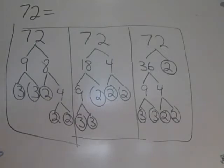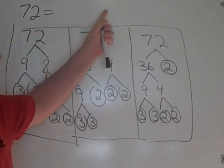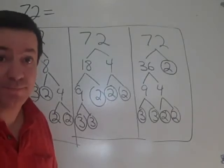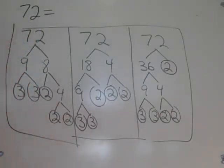So that would be another factor tree. If you are asked to find the prime factorization of 72 and you don't write down a product of numbers that equals 72, a product of prime numbers that equals 72, you didn't answer the question.